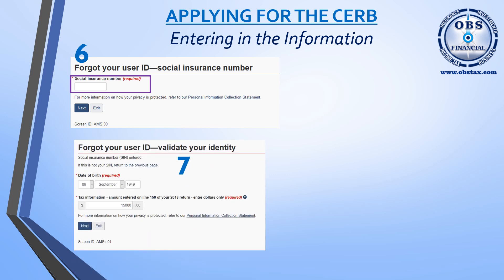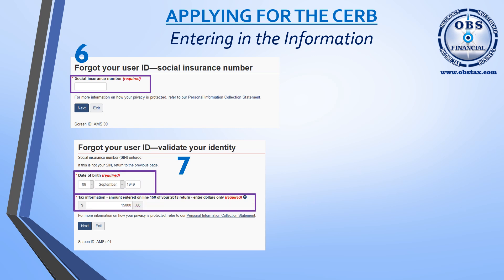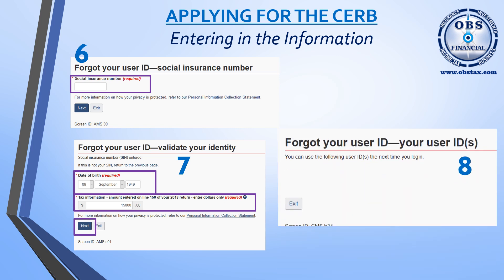The next screen will ask you for your date of birth and the information from your income tax return as previously mentioned. Once you have those two pieces of information entered in, click on the Next button, and you'll end up getting a copy of your user IDs.